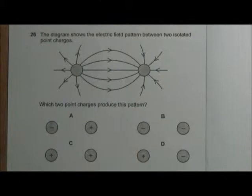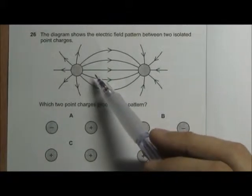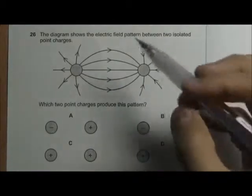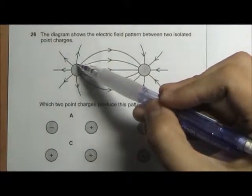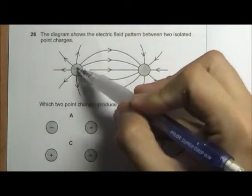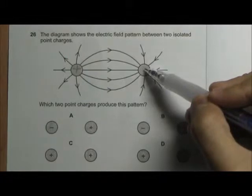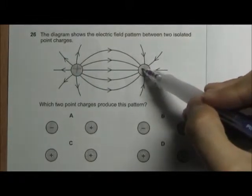This question shows two isolated point charges with the electric field patterns. For this point charge, the field lines are going out from the charge, so this must be a positive charge. And for this point charge, the field lines are going inward, so it has to be a negative one.